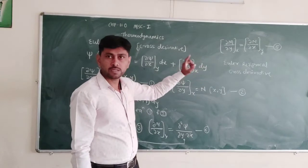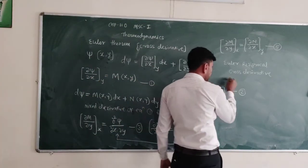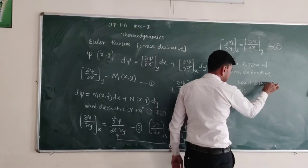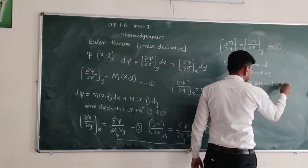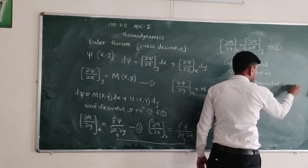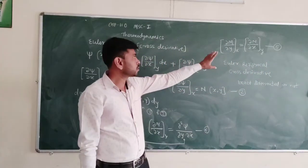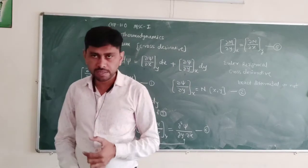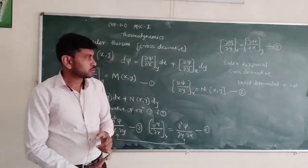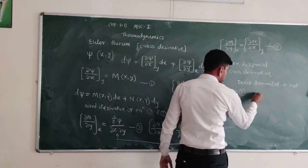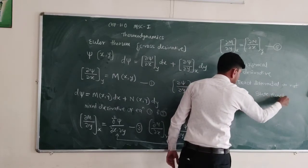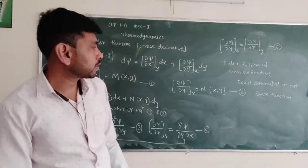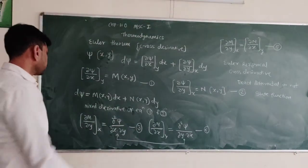The use of this theorem: the Euler reciprocal relation is used to find out whether a given differential is an exact differential or not. Euler theorem is important for finding out whether the given differential is exact or inexact, and this theorem is also useful only for state functions.